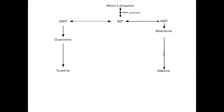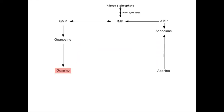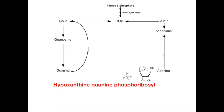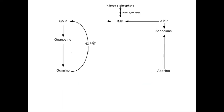In this video, we will learn about the salvage pathway, which can actually start from the bottom up — that is, free bases turning into nucleotides. Starting with the free base guanine: guanine can be converted into its nucleotide form GMP by the enzyme hypoxanthine-guanine phosphoribosyl transferase, or HGPRT for short, with the addition of PRPP.